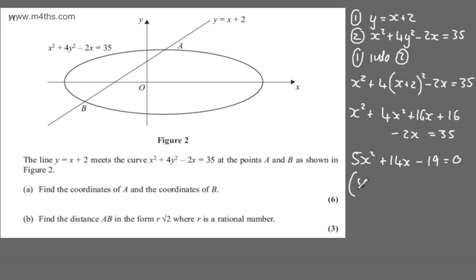This is going to factor. We're going to have 5x plus 19, and then we'll have x minus 1, and that's equal to 0. So we'll have x is going to be equal to 1, and we'll have that x will be equal to minus 19 over 5.